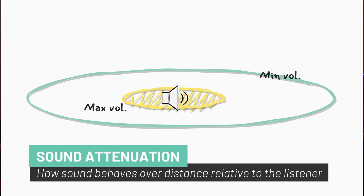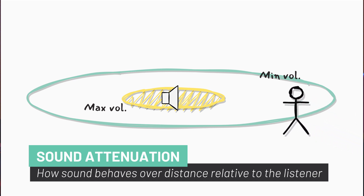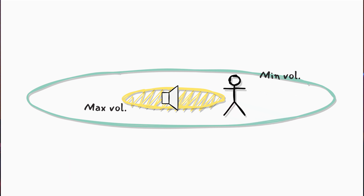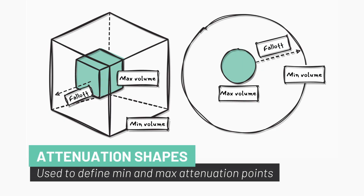Sound attenuation is the setting that controls the size of the area over which we'll hear the sound, and it defines how sound behaves over distance and relative to the player. The minimum and maximum points of volume can be defined using different shapes, such as spherical shapes or cubic shapes.